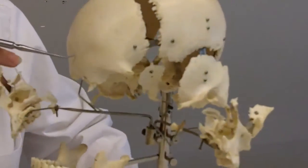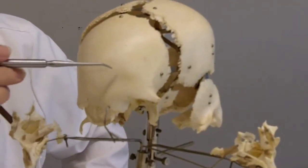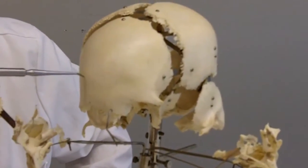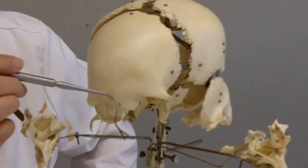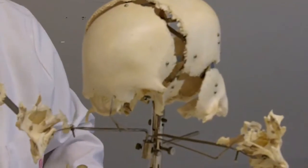Some people also have a metopic suture. During development the two frontal bones usually fuse together but sometimes they don't and that suture remains. There's some smaller sutures too but we won't go into those.